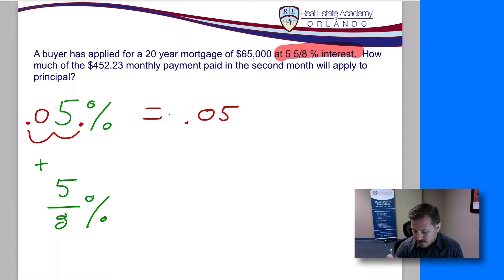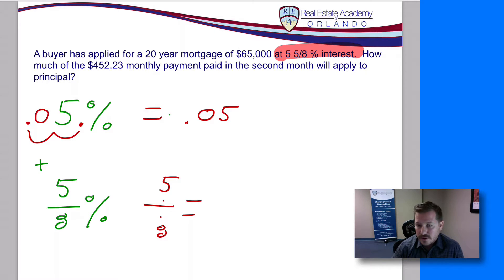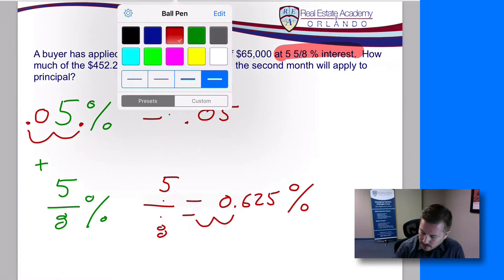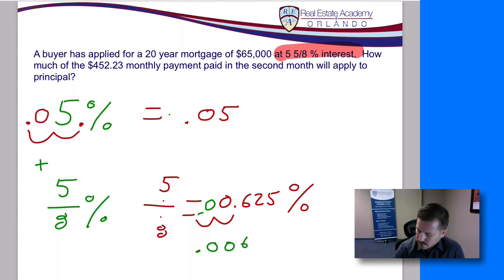Now take a look at the five eighths percent. First we have to create a decimal version of the fraction. Five eighths is the same thing as five divided by eight. So we take five divided by eight and we get 0.625. But remember, this is still a percent — it's 0.625 percent. Just like we did for the five percent, we move the decimal place two places to the left, and we end up with 0.00625.